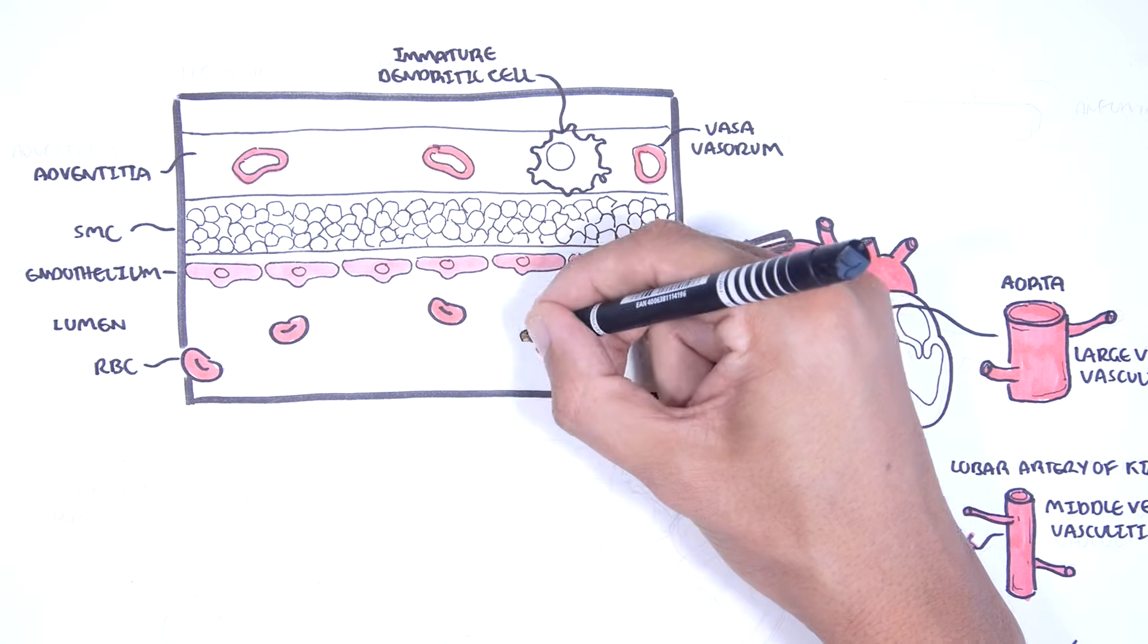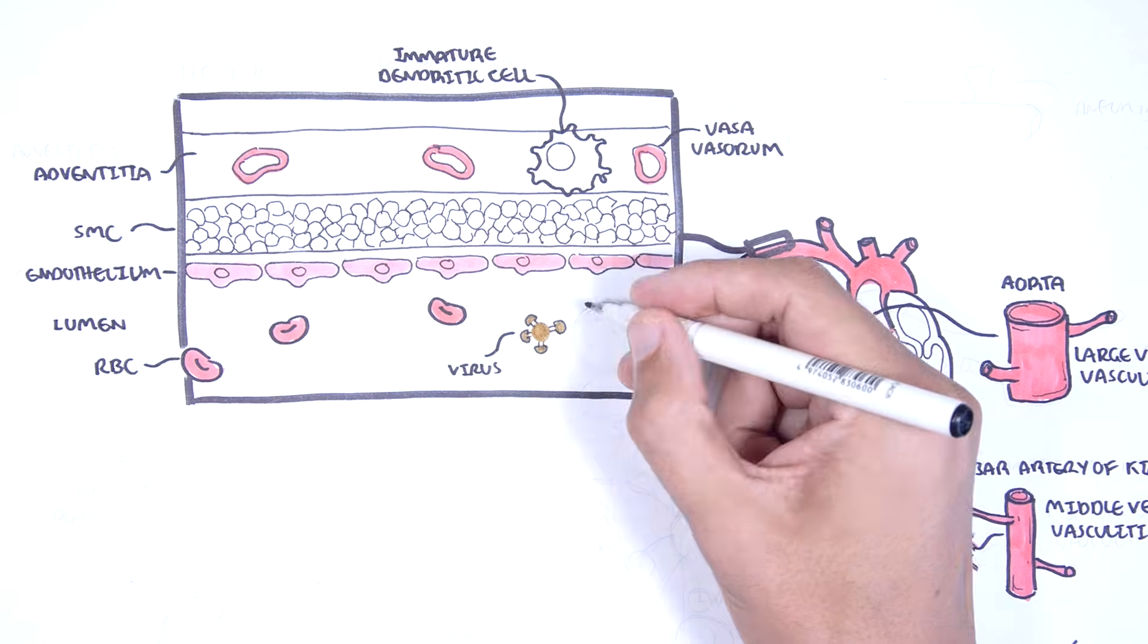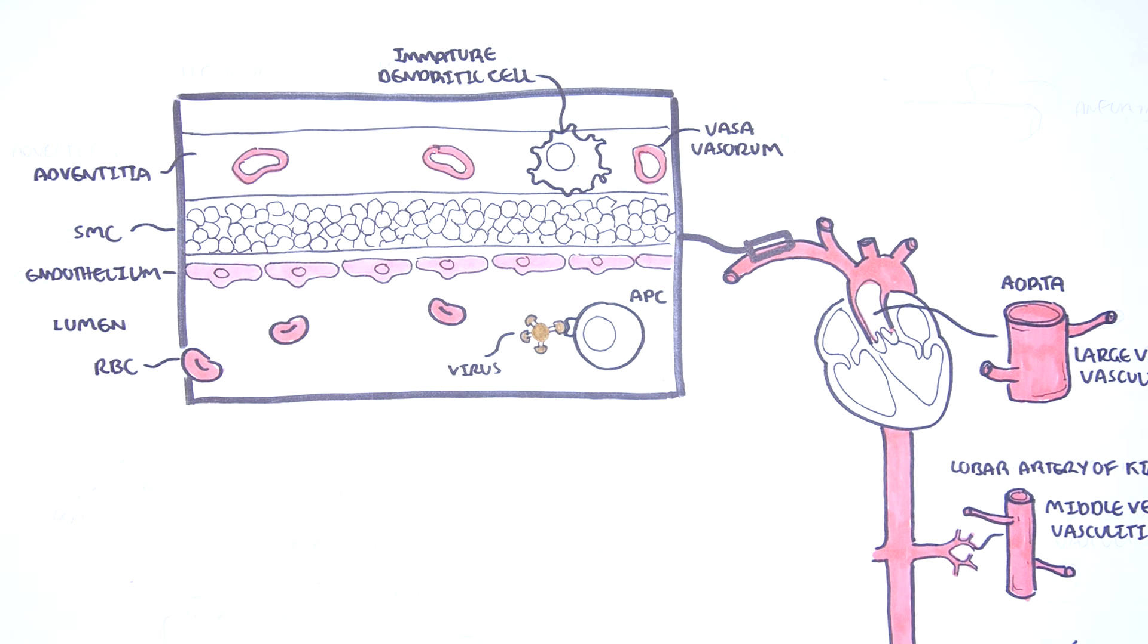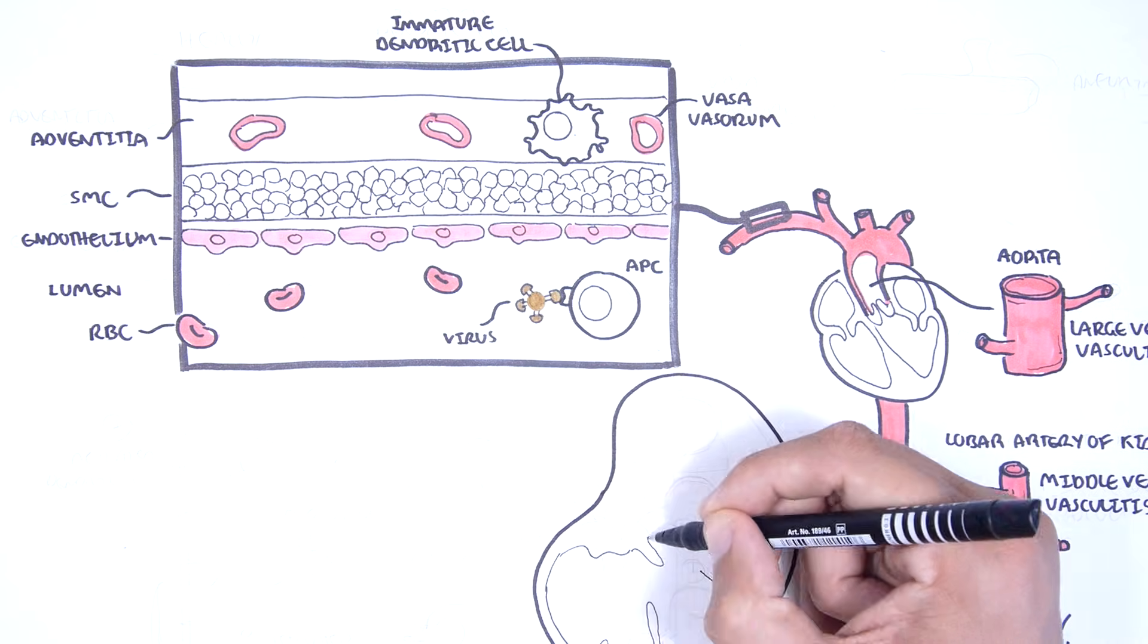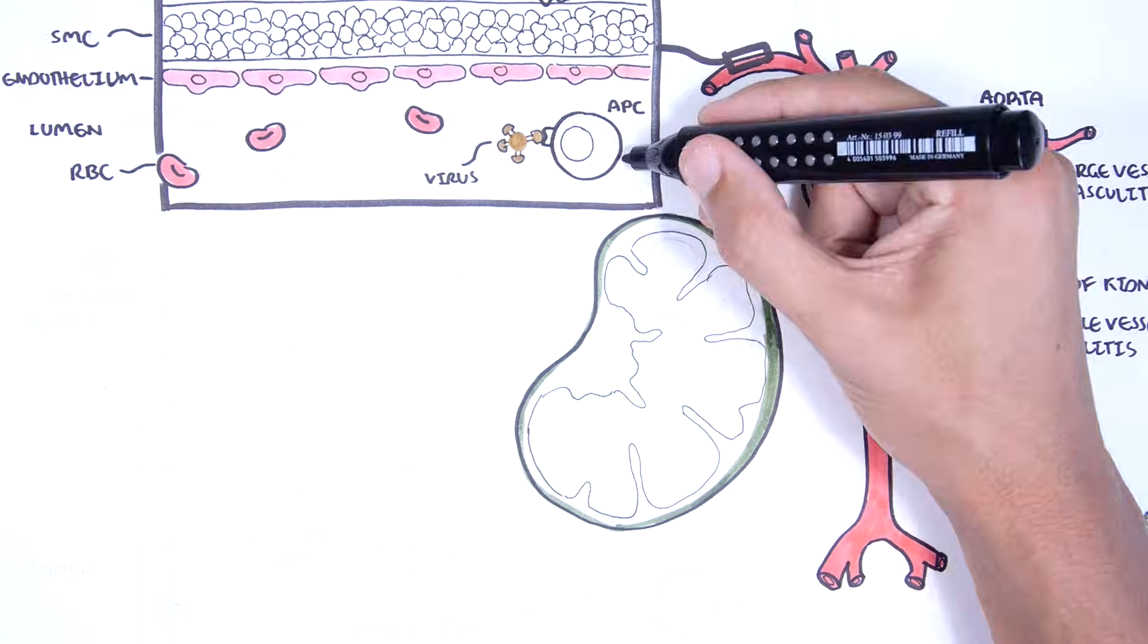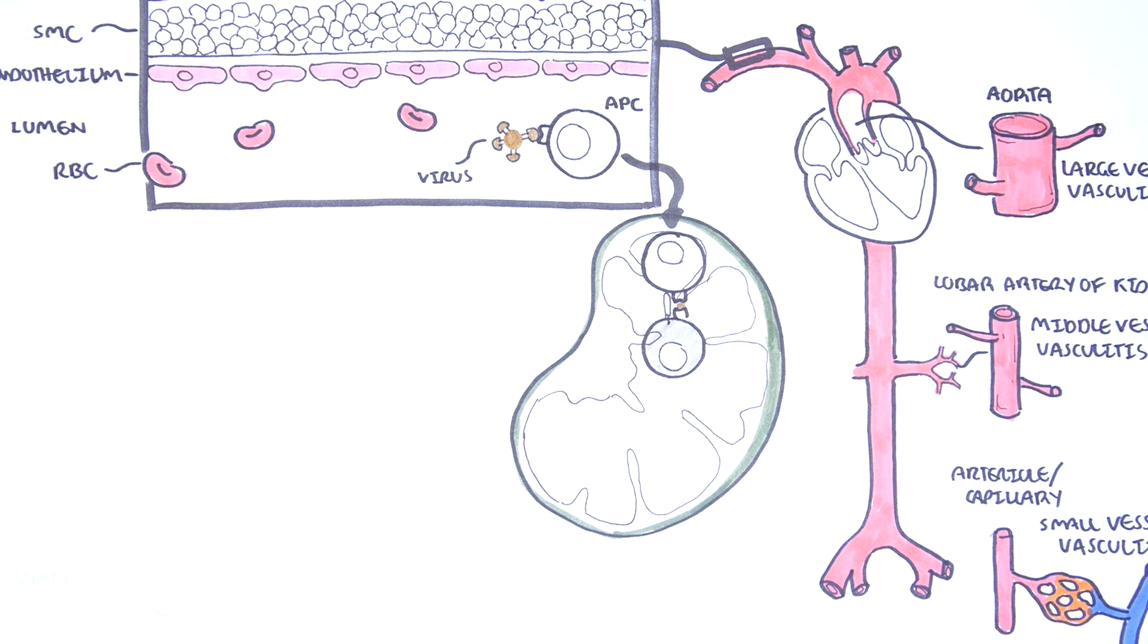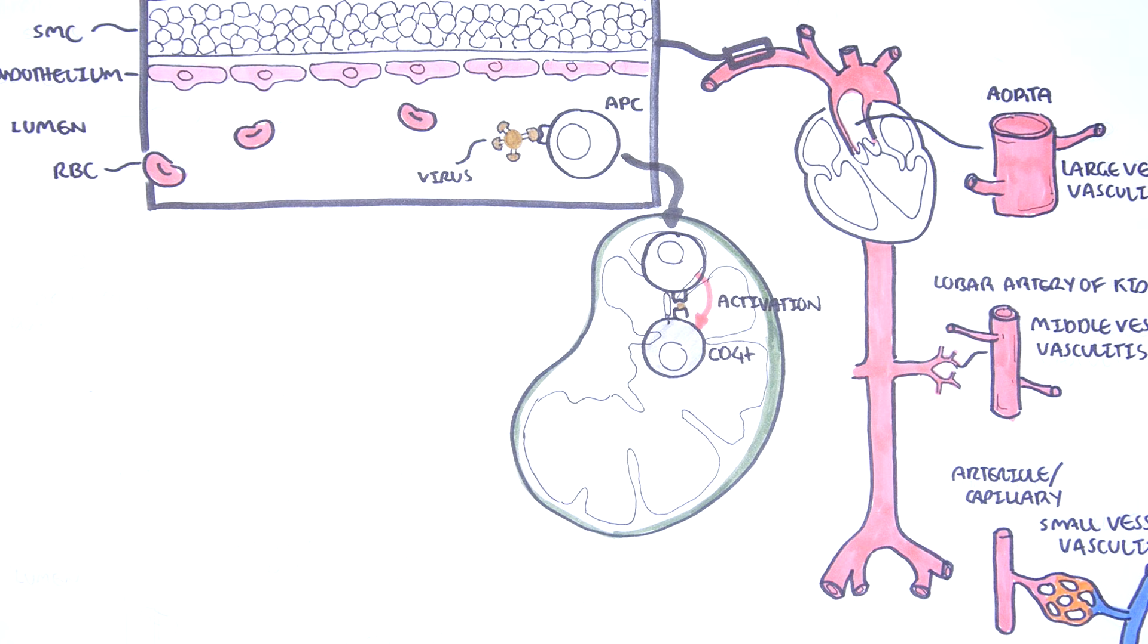If a virus, bacteria, or an antigen is in our circulation, they can be picked up by antigen presenting cells. If the pathogen invades the vessel layers, the antigen presenting cells in the adventitia can also pick this up and mount an immune response. The antigen presenting cell, being the dendritic cell or the monocyte, can carry the antigen of the pathogen to nearby lymph nodes where immature lymphocytes reside. Here the antigen presenting cell presents the antigen to the lymphocytes and activates CD4 T lymphocytes.